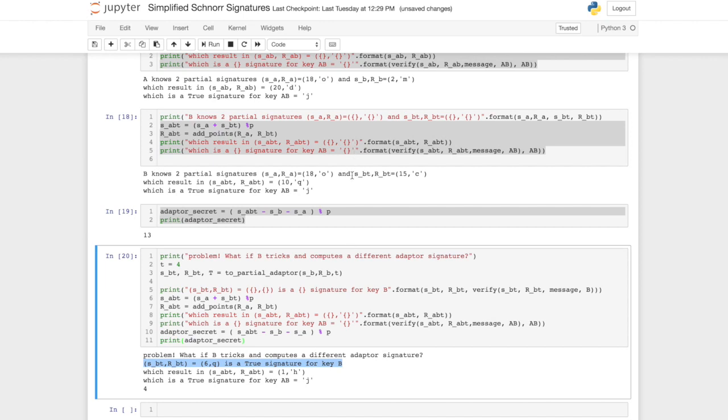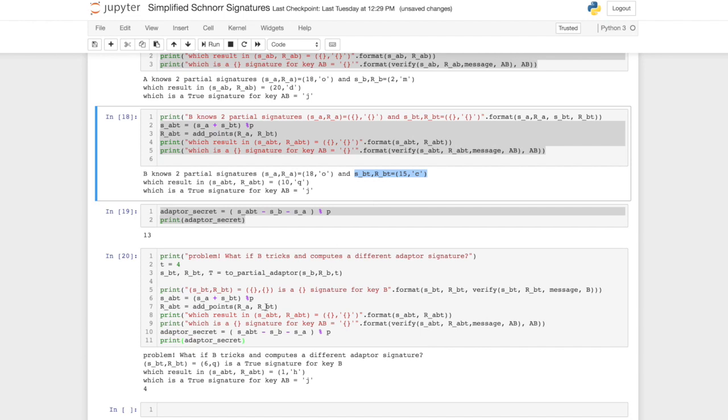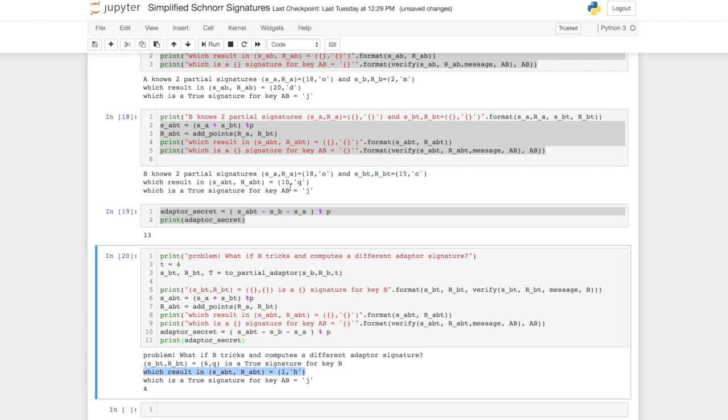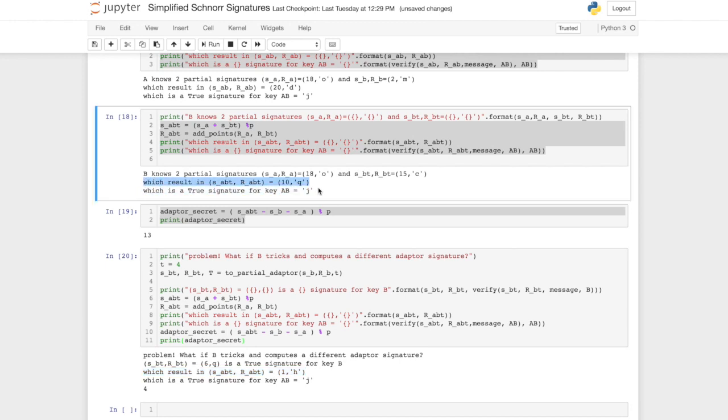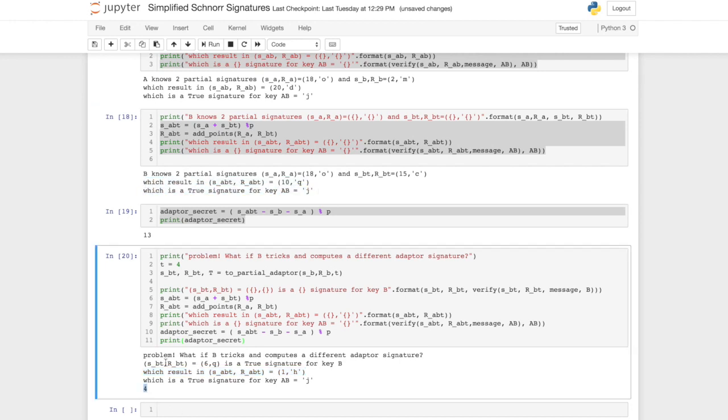And it results in a different multi-signature. The new multi-signature would be 1h in comparison to the other multi-signature 10q. And now if you do the computation you see that the new secret was hidden in there. This is obviously a big problem if you want to really use this in htlcs because then the adapter secret should really commit to the adapter point or to the payment point.